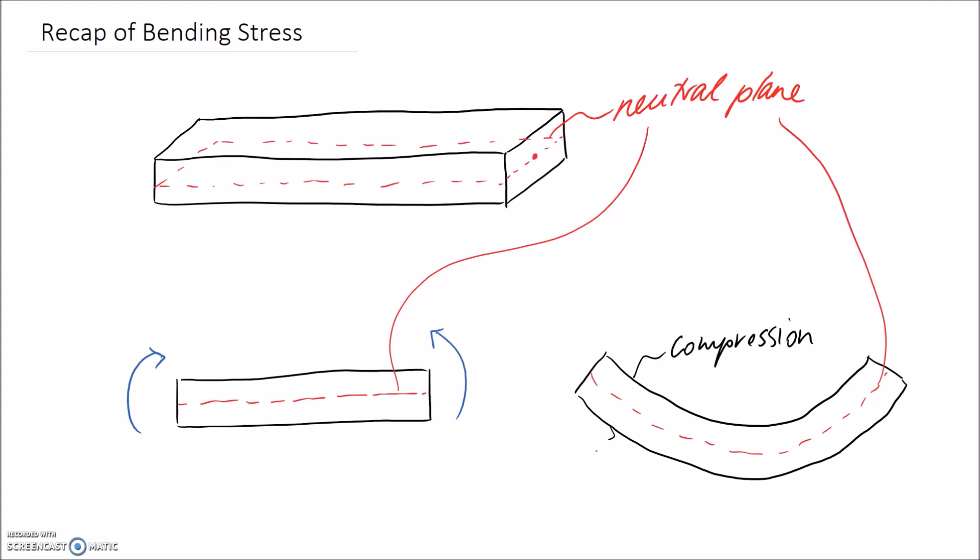So the opposite happens on the opposite side. This one is in tension, and all of the molecules on the bottom side of this beam are going to be stretched apart. Hopefully you can see that the extent to which this happens is going to increase the further you move away from the neutral axis.